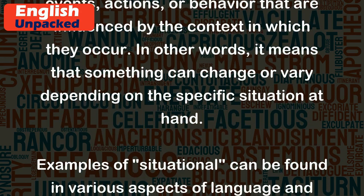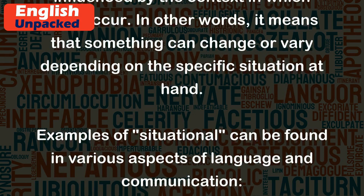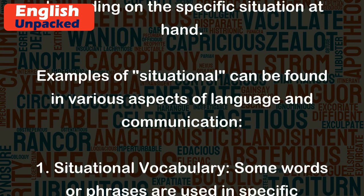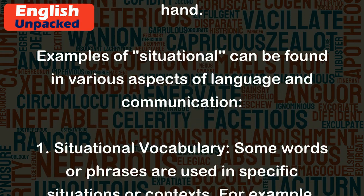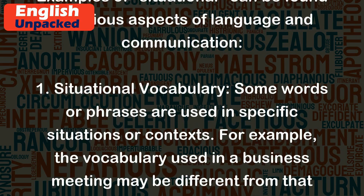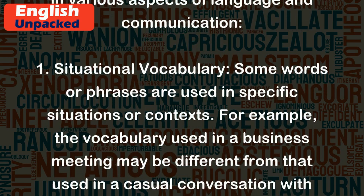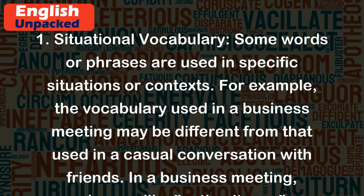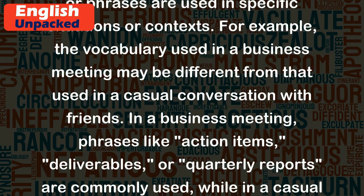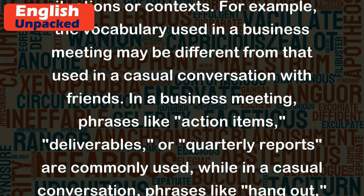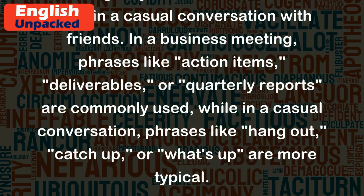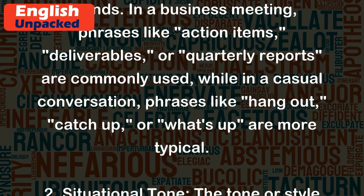Examples of 'situational' can be found in various aspects of language and communication. 1. Situational vocabulary: Some words or phrases are used in specific situations or contexts. For example, the vocabulary used in a business meeting may be different from that used in a casual conversation with friends. In a business meeting, phrases like 'action items,' 'deliverables,' or 'quarterly reports' are commonly used, while in a casual conversation, phrases like 'hang out,' 'catch up,' or 'what's up' are more typical.